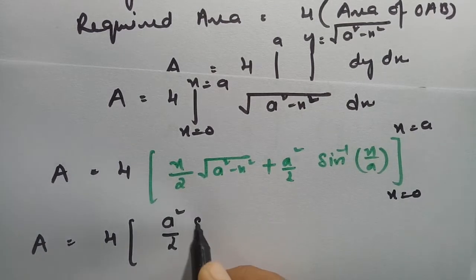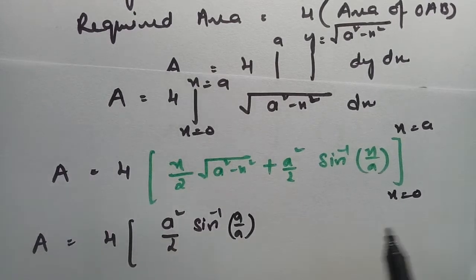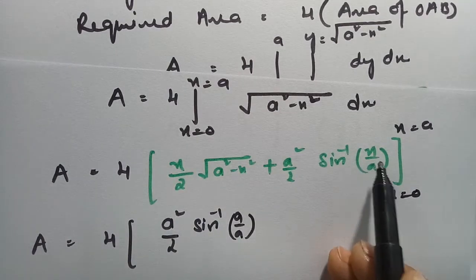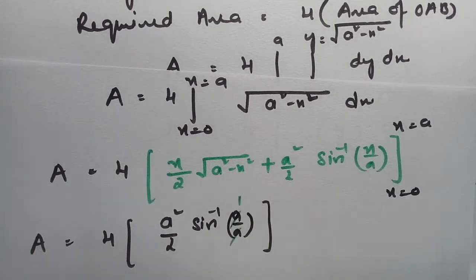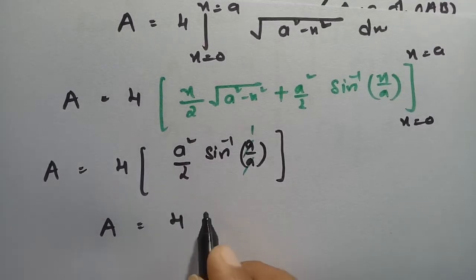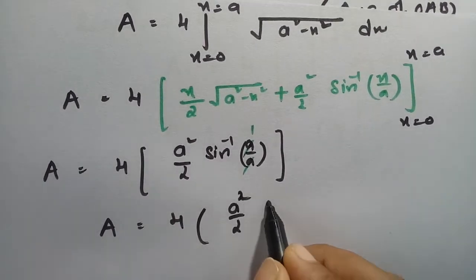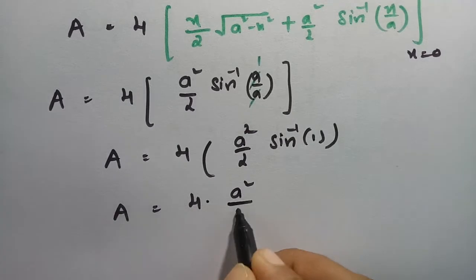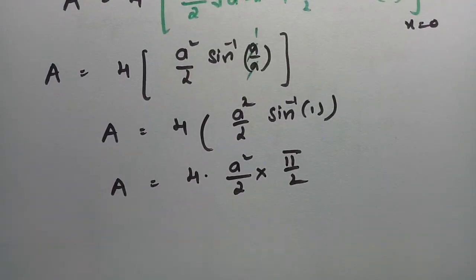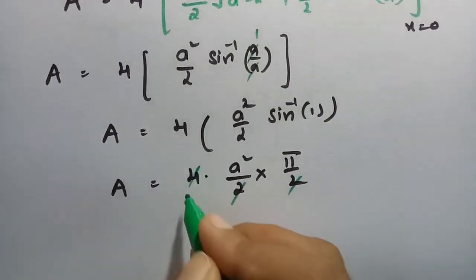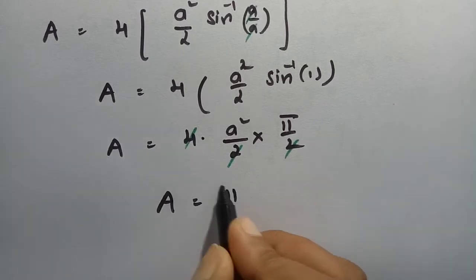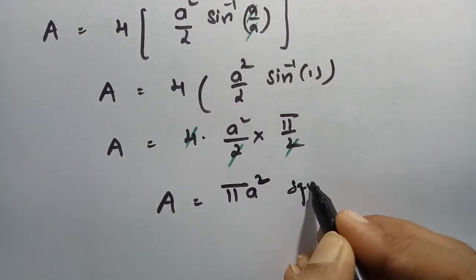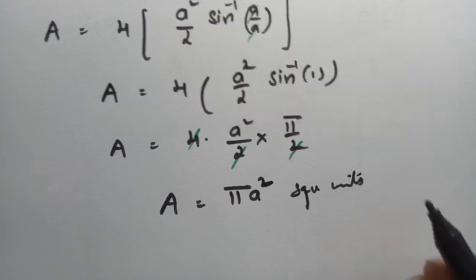Substituting x = a: the term with the square root becomes 0, leaving (a²/2) sin⁻¹(1). Substituting the lower limit x = 0: everything is 0, since 0 times anything is 0 and sin⁻¹(0) = 0. So the area = 4 × (a²/2) × sin⁻¹(1). Since sin⁻¹(1) = π/2, the area = 4 × (a²/2) × (π/2) = πa² square units.